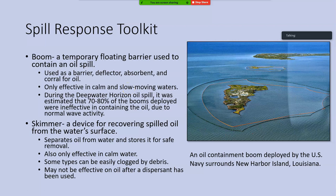Let's talk about what we can do to respond to an oil spill — the tools in our toolkit. First, we have booms, which are temporary floating barriers used to contain a spill. They can protect areas from being oiled, and can be used as a barrier, a deflector, or with absorbent material wrapped around them to clean up oil. They can also corral oil into one location for removal.